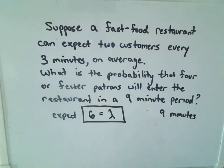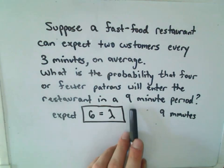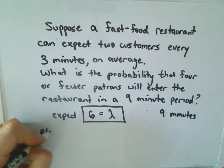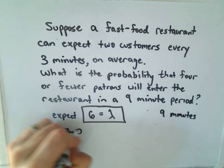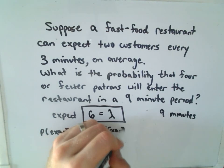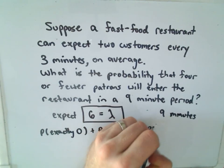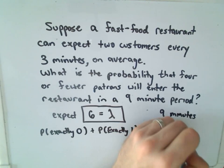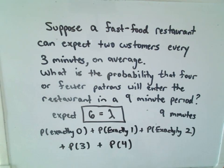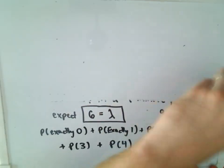We can expect lambda occurrences over our time period, so over our nine-minute time period we would expect six occurrences. To find the probability that four or fewer patrons entered the restaurant, we need to compute the probability of exactly zero, plus exactly one, plus exactly two, plus exactly three, plus exactly four — that sum gives us P(X ≤ 4).